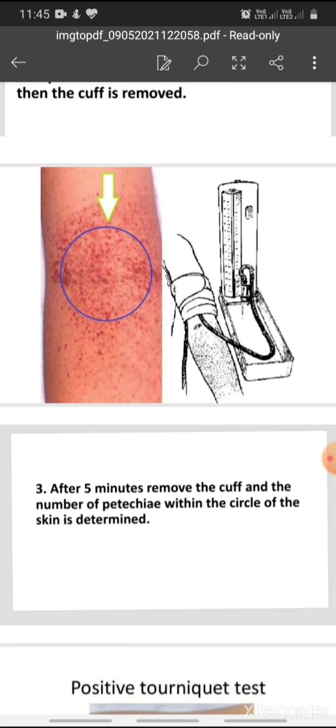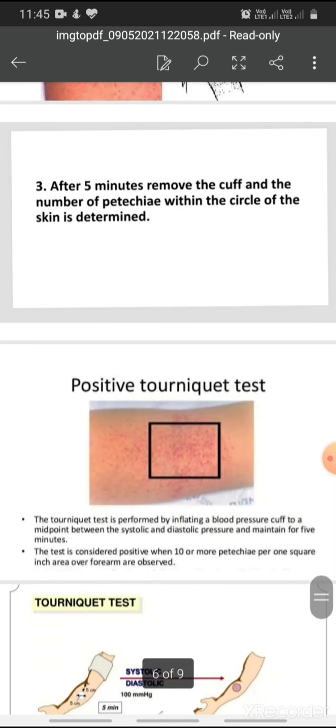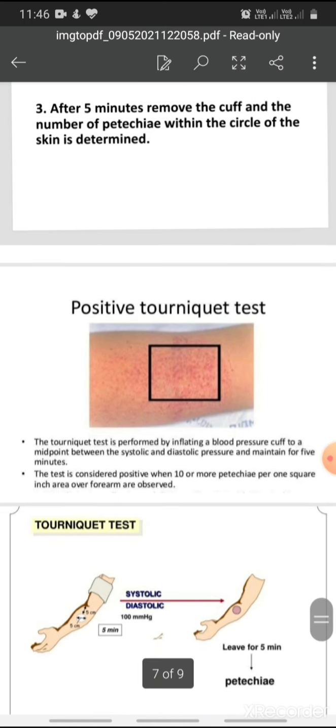For a positive tourniquet test, you can see the area we have selected. If there are more than 20 petechiae, that means our tourniquet test or HESS test is positive.